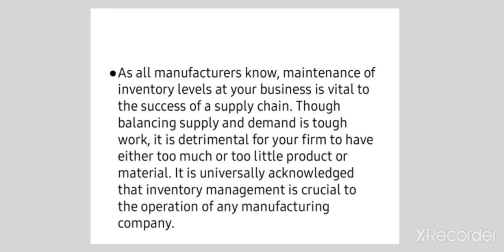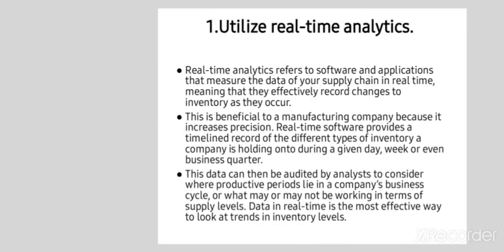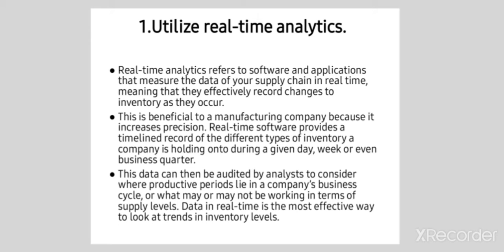All manufacturers know that maintenance of inventory levels at the business is vital for success and for the supply chain. Balancing between supply and demand is very tough. It is detrimental for the firm to have either too much or too little — overstocking or understocking should not happen. A minimum stock, the par level of inventory, should be maintained. Inventory management is crucial to the operation of any manufacturing company, and there are certain ways by which inventory can be judged and maintained.